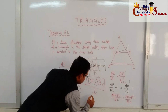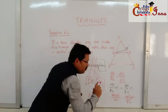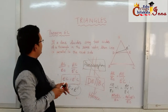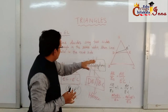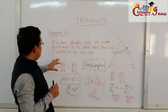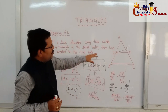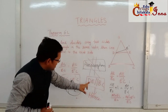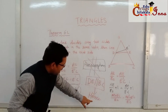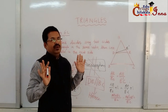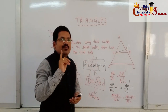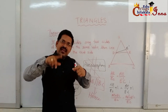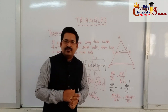Hence proved! We proved that if a line divides any two sides of a triangle in the same ratio, that line will be parallel to the third side — that is, DE is parallel to BC. This is the converse of the Basic Proportionality Theorem. Please watch the video again to understand it better.